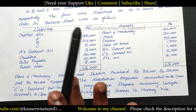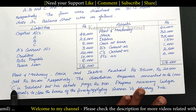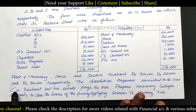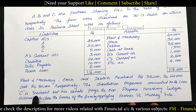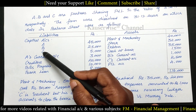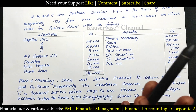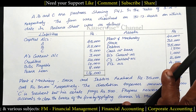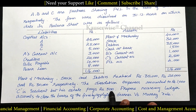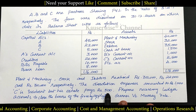The remaining two partners are solvent. An insolvent partner means that particular partner's liabilities are more than his total assets. So out of three partners A, B, C — C is insolvent, which means the remaining two partners are solvent. Solvent means they are capable. C is insolvent, but his estate pays 500 rupees — he could only pay 500 rupees towards his total deficiency.